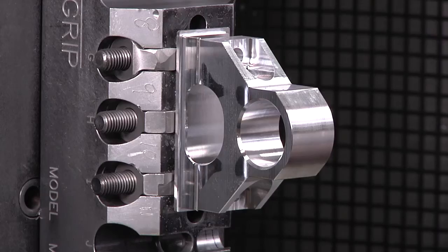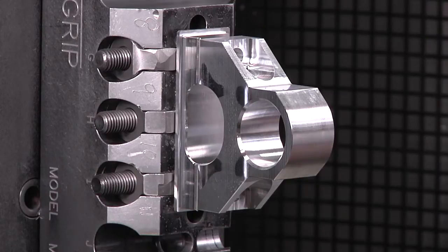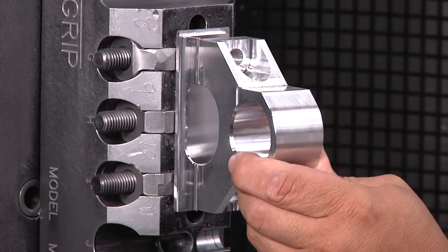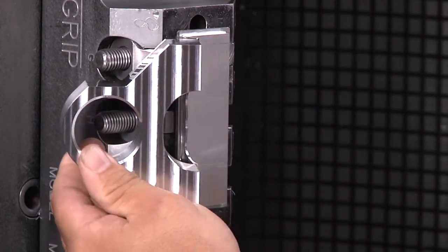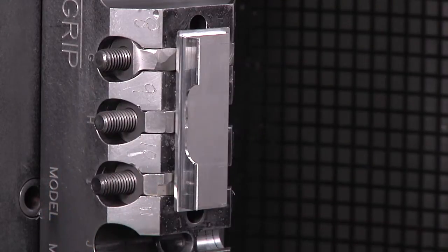This first case study will demonstrate the ability of the Technogrip workholding platform to perform all of the machining in a single operation, leaving a part that only needs to be snapped out and deburred.